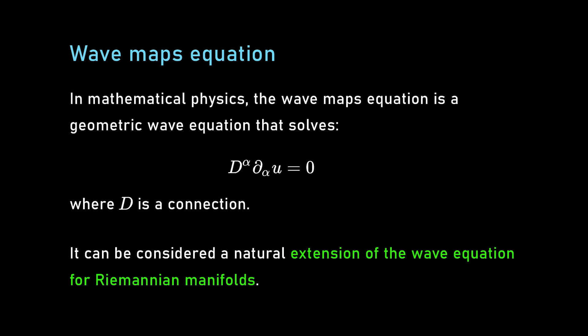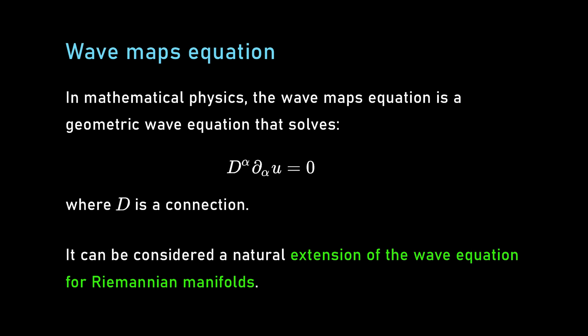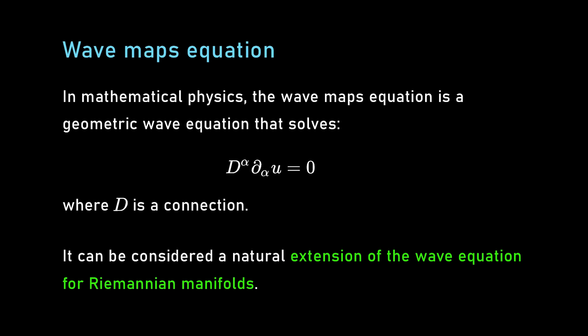I have worked on some equations. There's something called the wave maps equation, or the sigma field model, which is not quite the equation of space-time gravity itself, but of certain fields that might exist on top of space-time. Einstein's equations of relativity just describe space and time itself, but then there's other fields that live on top of that — the electromagnetic field, Yang-Mills fields. There's this whole hierarchy of different equations, of which Einstein is considered one of the most nonlinear and difficult. But relatively low on the hierarchy was this thing called the wave maps equation.